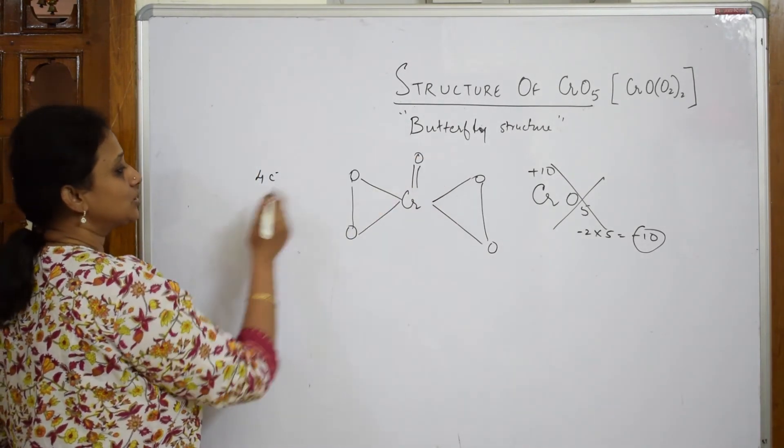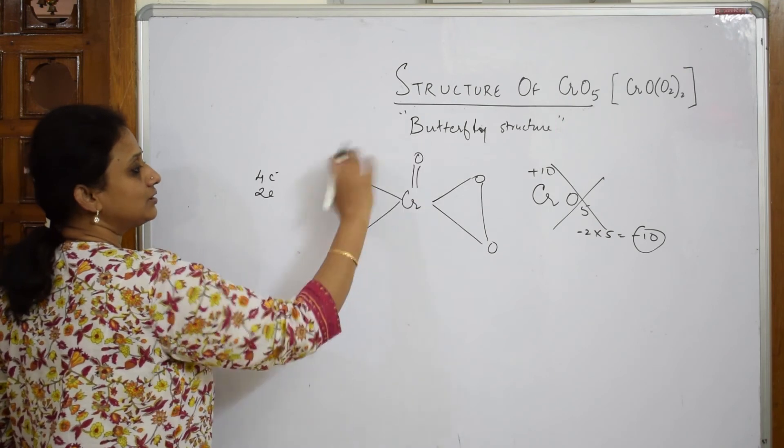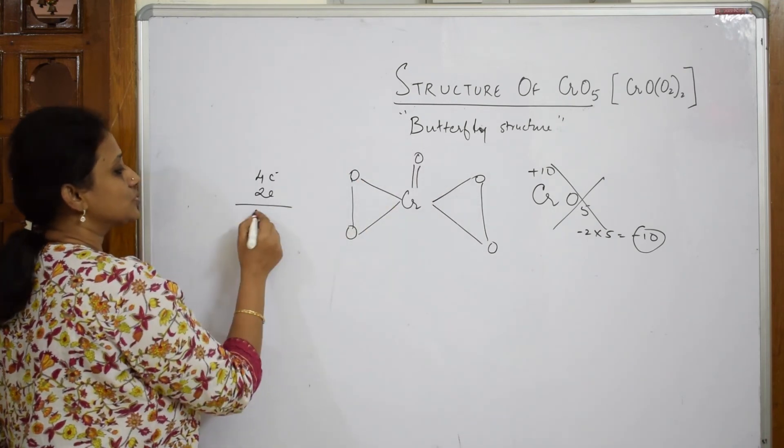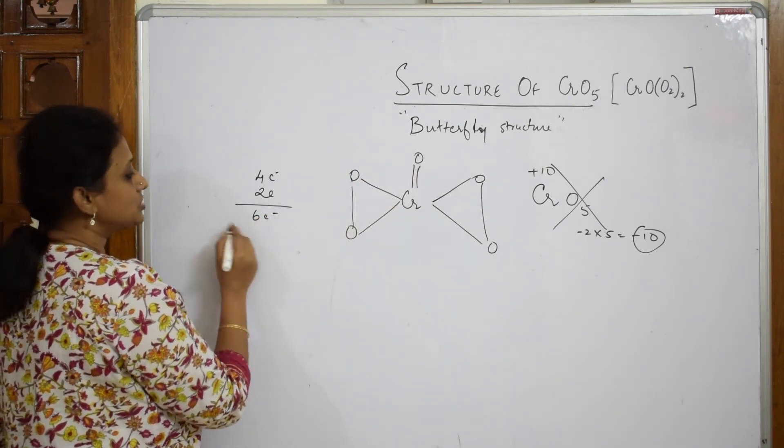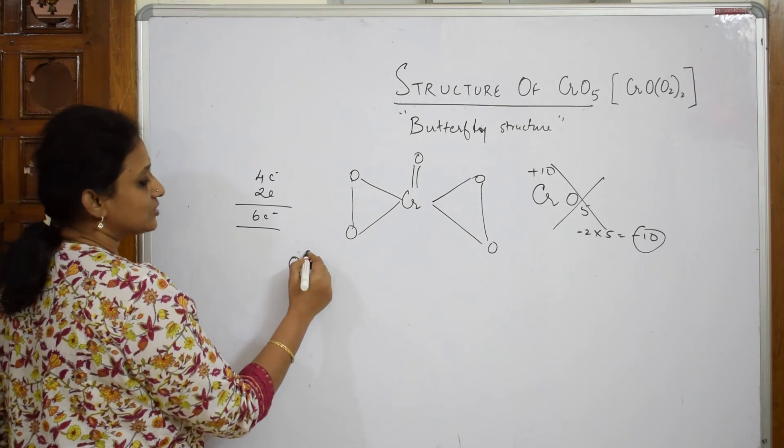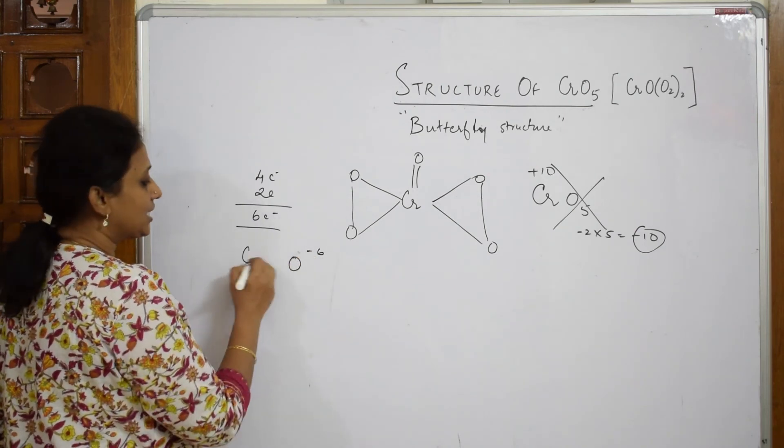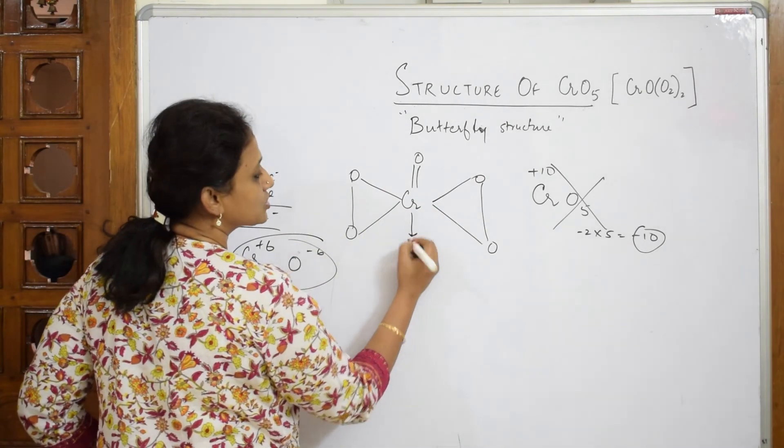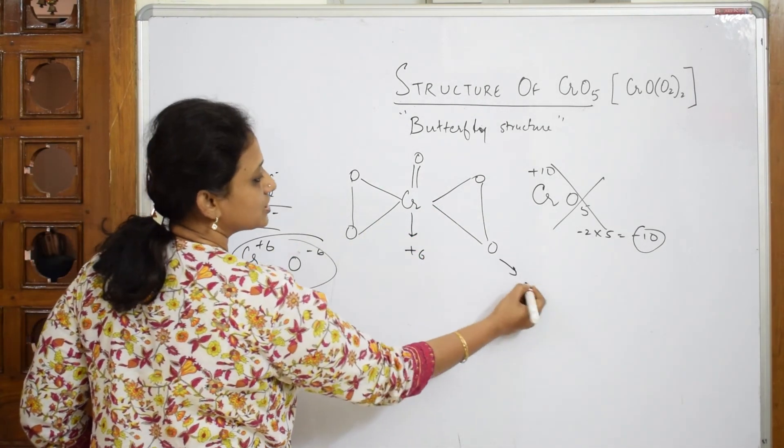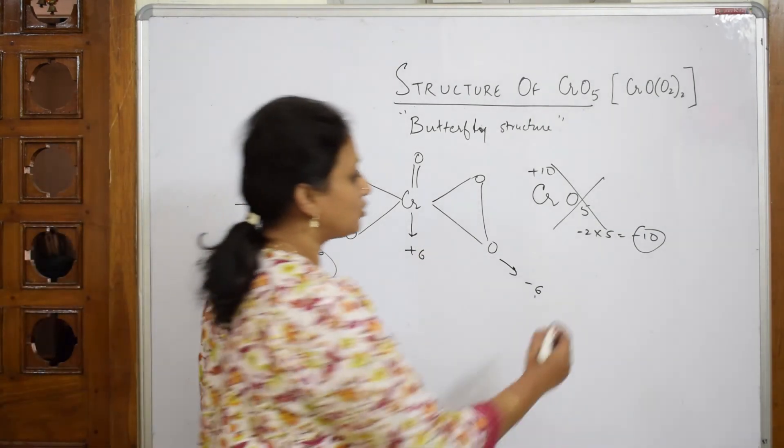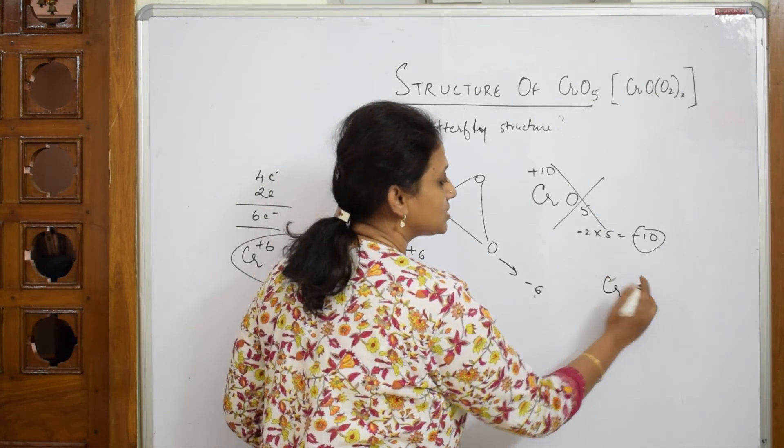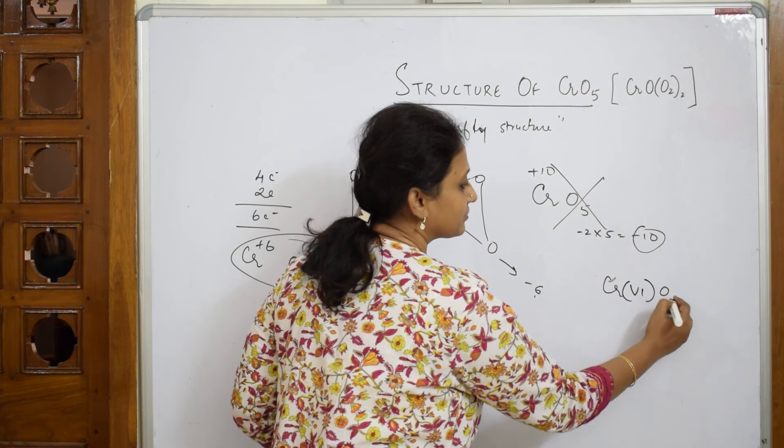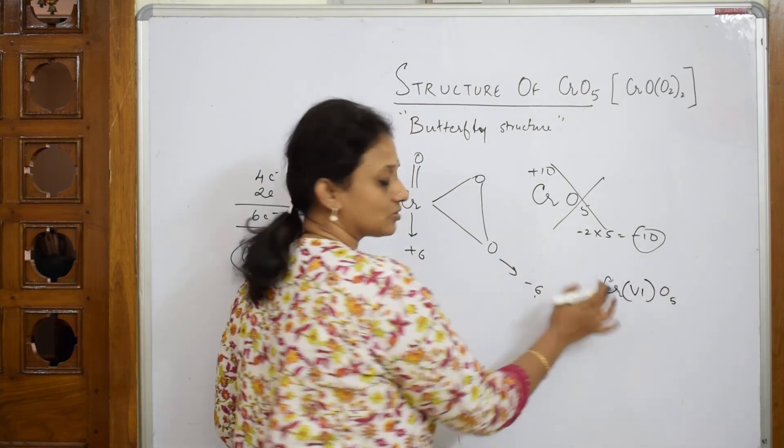We consider this as one entity. This is going to drag one electron and this is going to drag one more electron - total of two electrons by single bonds. So four here, and one here, one here - total of two. So six electrons. Oxygens have six electrons, minus 6 here, and chromium obviously will have +6. So the oxidation state of chromium is +6 and for oxygen it is -6. In CrO₅, the oxidation state is +6.